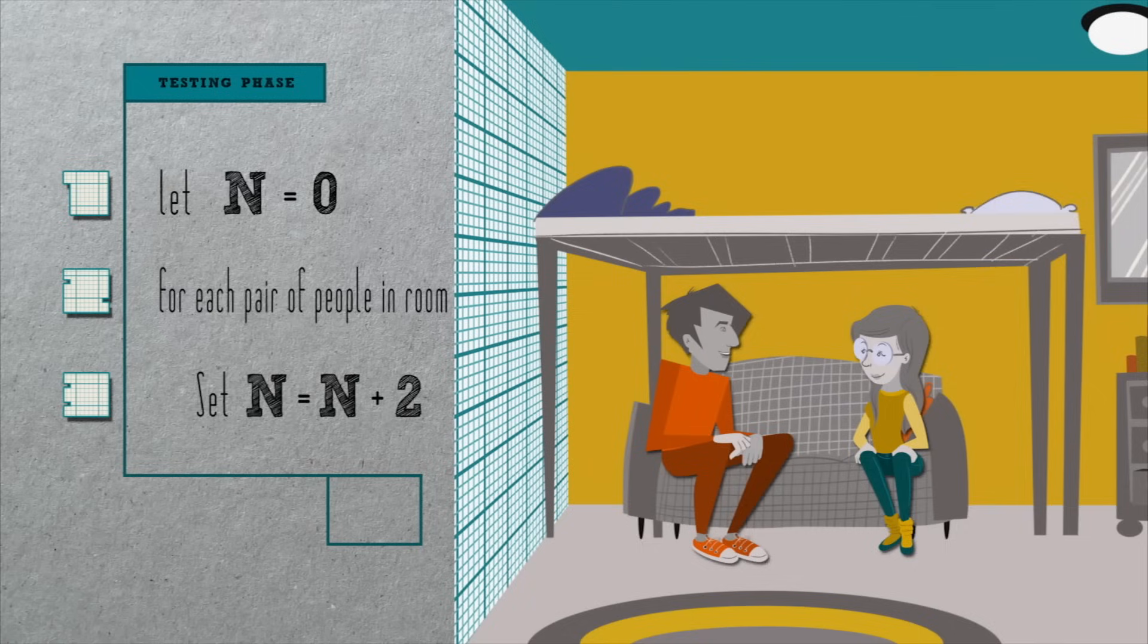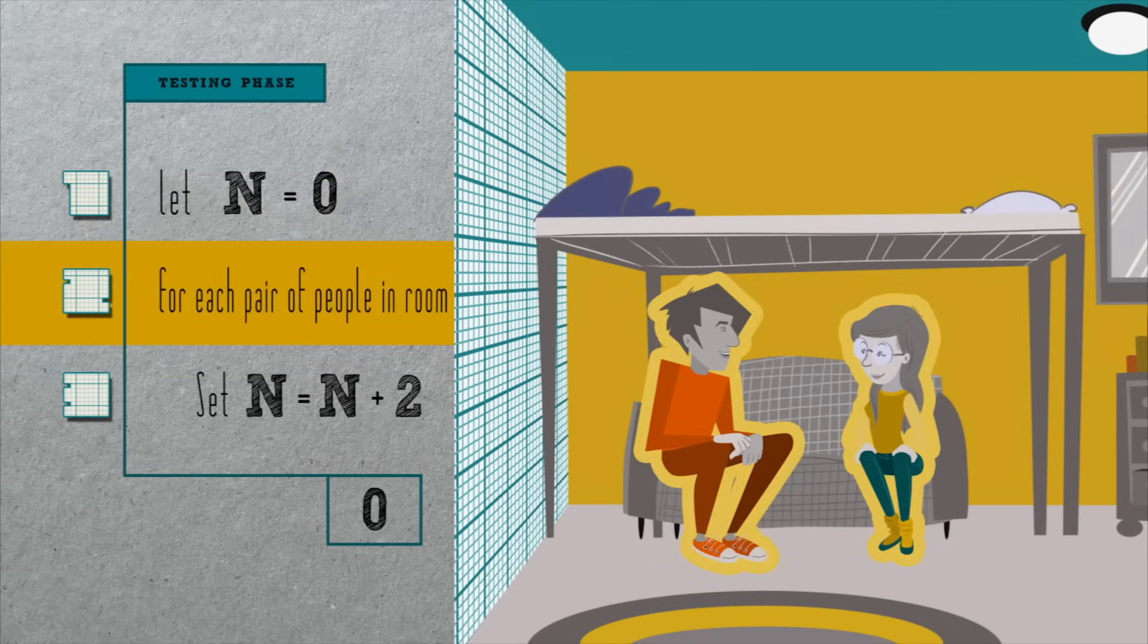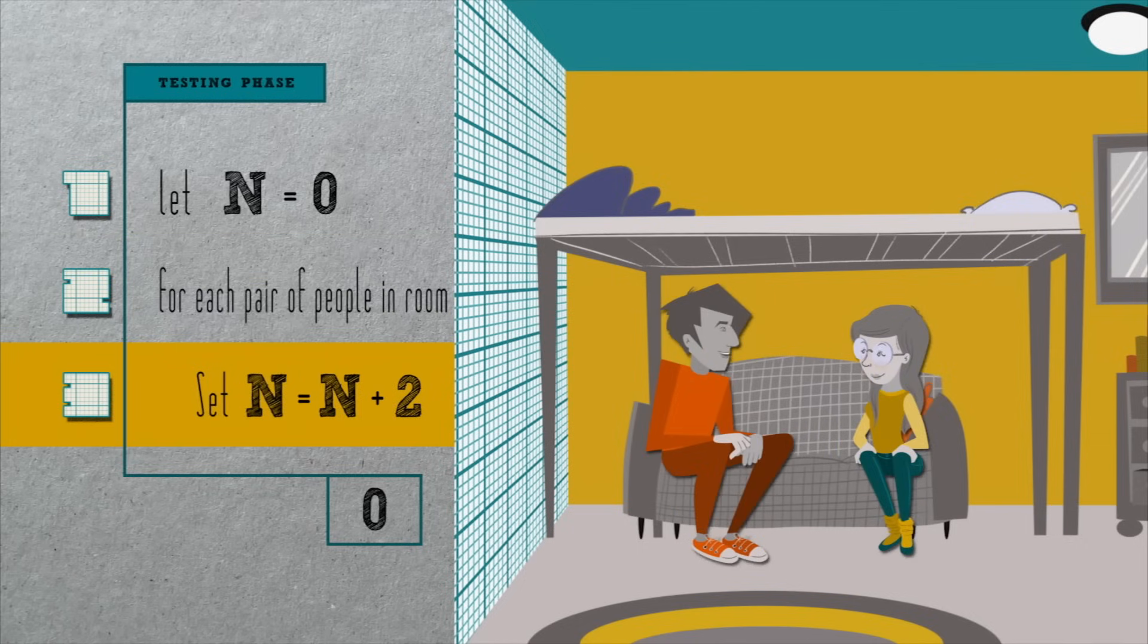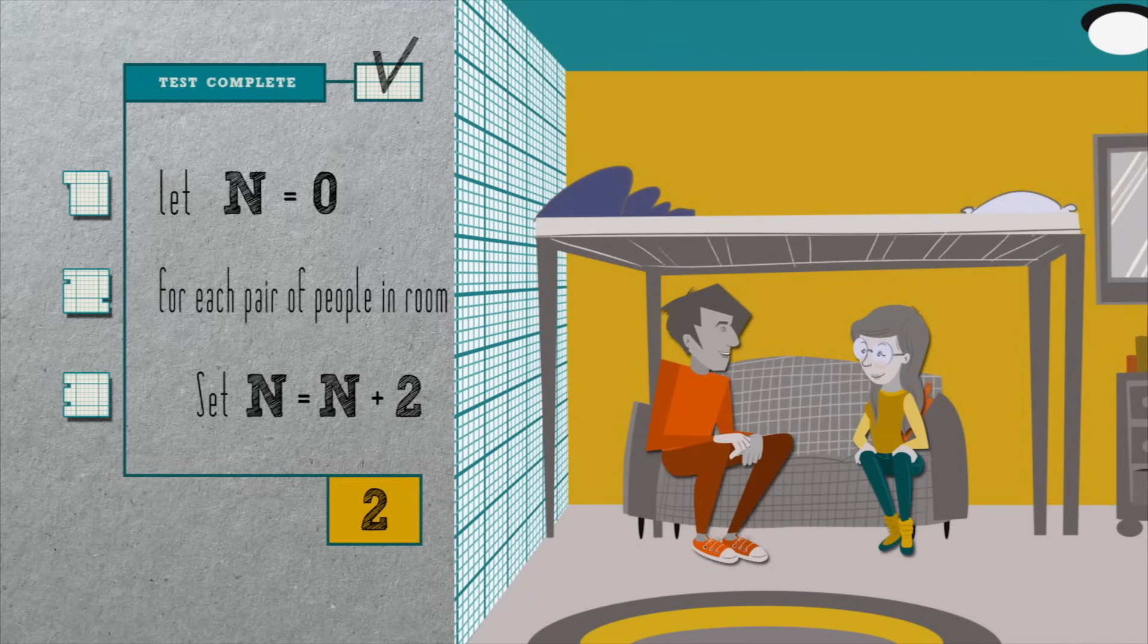Let's see. Does it work if there are two people in the room? In line one, we initialize n to zero. For that one pair of people, we then increment n by two, and so by this algorithm's end, n is two, which indeed matches the number of people in the room.